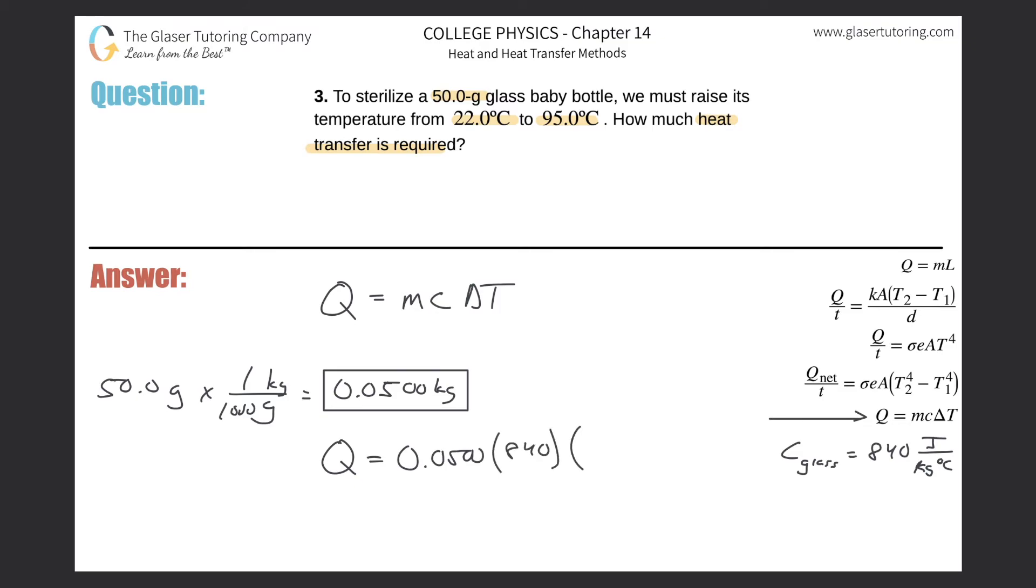the value of the specific heat. And then final minus initial here. So the final temperature is 95 minus that initial temperature of 22.